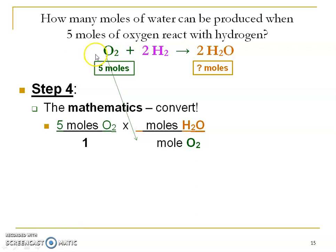So oxygen doesn't have a number in front of it. So that's an understood one and there's a two in front of the water so that's that. So again most of you can do the mathematics pretty easily but I do want to remind you that when we get to stoichiometry we're going to have three individual conversion factors. So do your mathematics in order. Five divided by one times two divided by one gives us those ten moles of water as our answer.